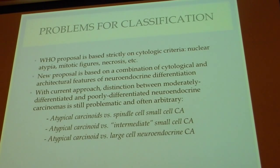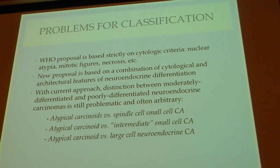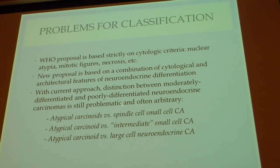One important observation is that the more differentiated tumors tend to show a very organoid or neuroendocrine type of growth pattern, whereas as the tumor becomes more aggressive, that organoid pattern is lost. Architecture seems to mirror the degree of differentiation and biologic behavior. The current distinction between moderately and poorly differentiated neuroendocrine carcinomas using WHO criteria remains problematic and often arbitrary, particularly when trying to separate tumor types.